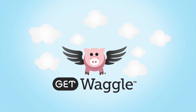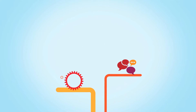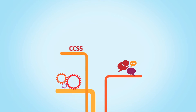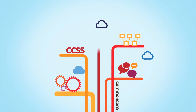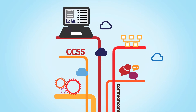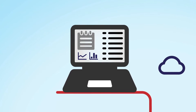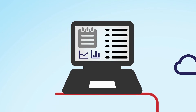Welcome to Get Waggle and the next generation of smart practice and learning transparency. Get Waggle is a learning system built around the standards, skills, and rigor established by the Common Core, and able to easily integrate into your teacher's current workflow and curriculum.